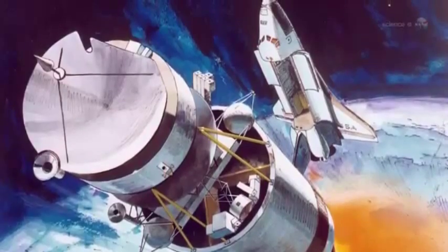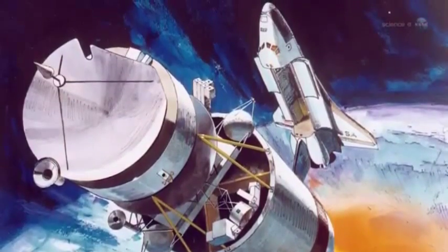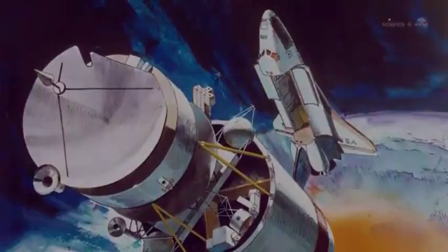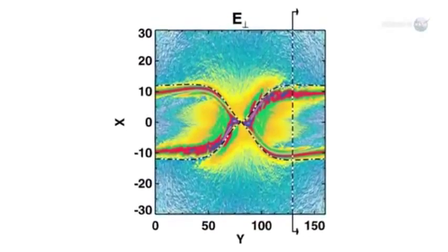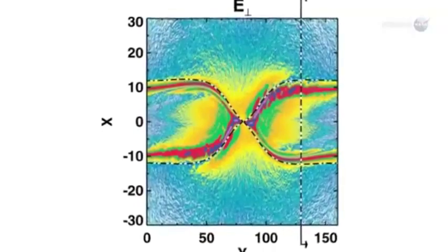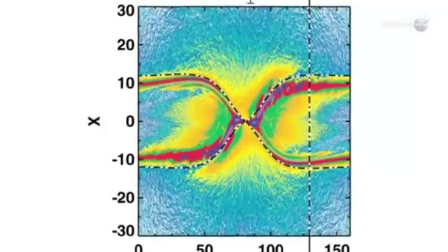Because Polar carried sensors similar to those of MMS, Scudder decided to see how an X-point looked to Polar. Using Polar data, we have found five simple combinations of magnetic field and energetic particle measurements that tell us when we've come across an X-point or an electron diffusion region.